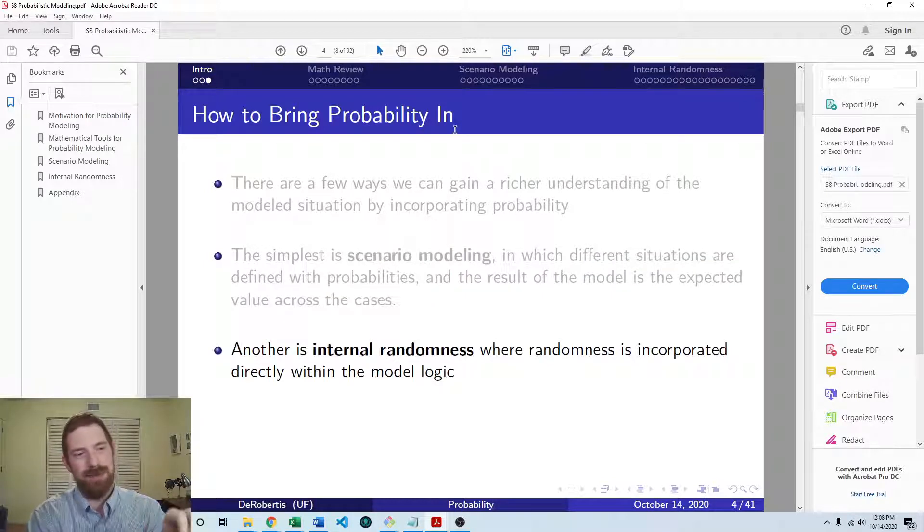So then the next method we'll talk about is internal randomness. In internal randomness, the randomness or probability is included directly into the model itself. There's something core about the model which uses this randomness or chance. Maybe you have an investment model where the investment return is going to be random each year with some parameters or something like that. So it's built into the main model itself.